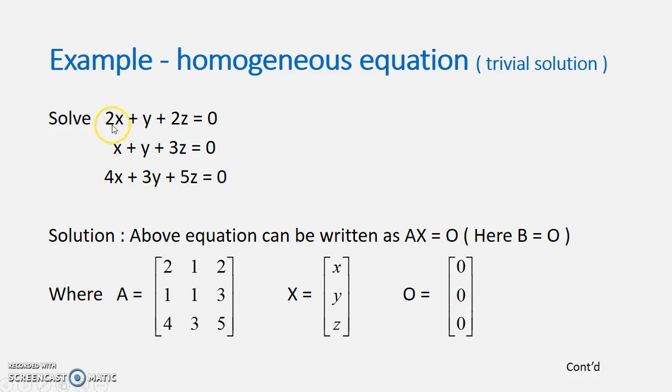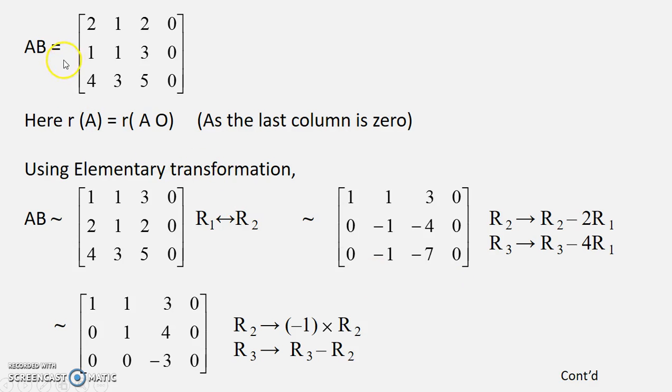A is coefficient matrix. We are writing 2, 1, 4, 1, 1, 3, 2, 3, 5 and X is xyz column matrix of unknown or variable. Now what we need to check by the theorem is whether the rank of A and rank of AB or A0 is same. So let us adjoin 0 with A which is the augmented matrix.